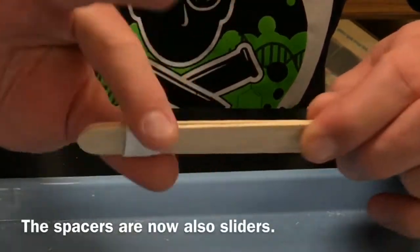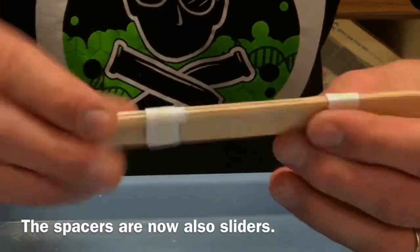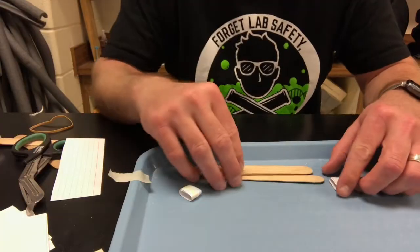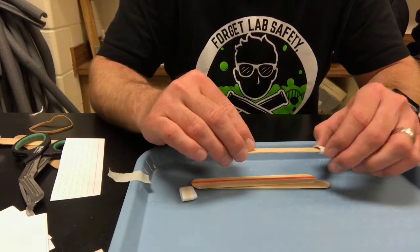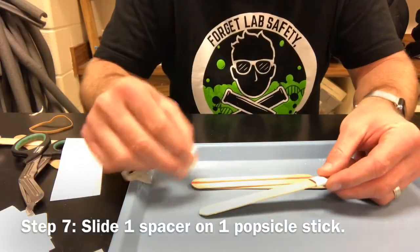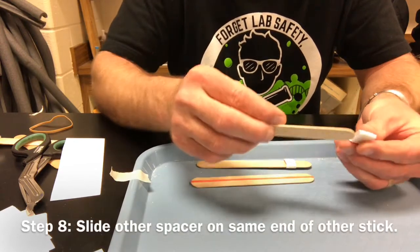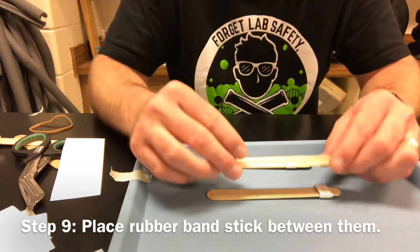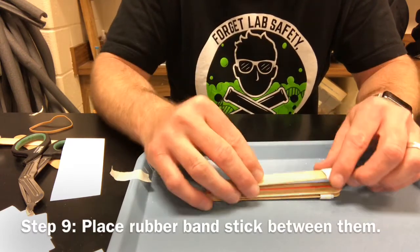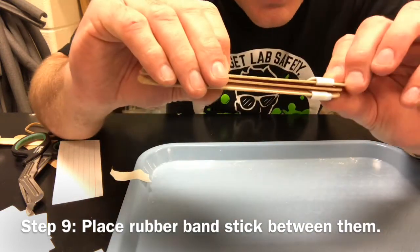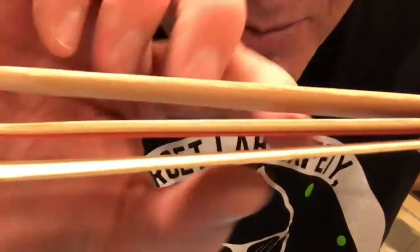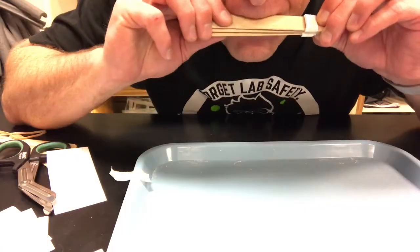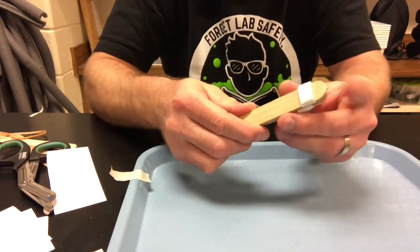So now I've got a slider. Slider is also a spacer. Slide off my sliders and this time I'm gonna put a slider on the top and a slider on the bottom. Now rubber band sandwich in the middle, slider on top. All that does is create a space between the popsicle sticks where the rubber band can vibrate. Now it's gonna fall apart, so I need to get another piece of tape.